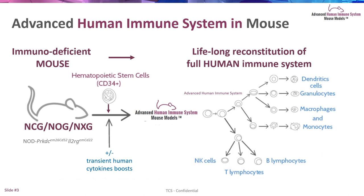This slide really summarizes what we mean by advanced human immune system mouse model. We start from highly immunodeficient animals — NOD-SCID IL-2 receptor gamma mutated animals. Those animals do not have any B, T, or NK cells of murine origin, so you only get some residual macrophages that are partially defective because of the IL-2 receptor gamma mutation. Those animals are very good recipients for engraftment with hematopoietic stem cells, so CD34-positive cells are engrafted into those animals.